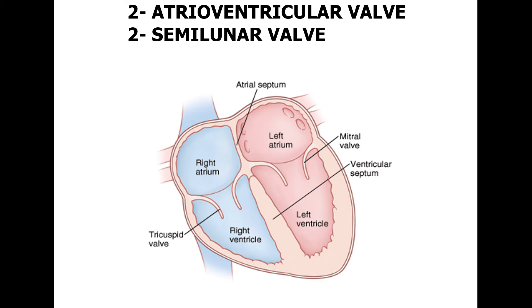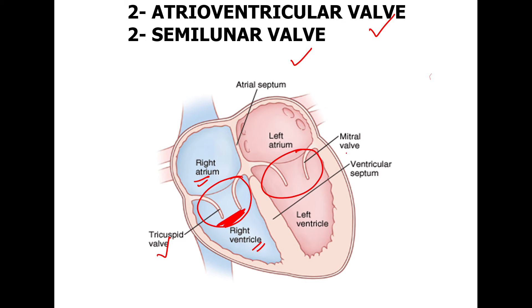In the human heart there are two atrioventricular (AV) valves and two semilunar valves. On the right side of the heart, the tricuspid valve is present between the right atrium and right ventricle. On the left side of the heart, the mitral valve is present between the left atrium and left ventricle — it is also called the bicuspid valve.